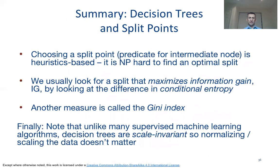To summarize, we have defined a formal model for building a decision tree. The model consists of choosing a split point starting at the root node and continuing at intermediate nodes until reaching a termination condition. The problem of finding the optimal split is NP-hard, so in practice we use a greedy algorithm that maximizes information gain from pre-split to post-split state, using entropy and conditional entropy — and optionally the Gini index — to assess that gain.